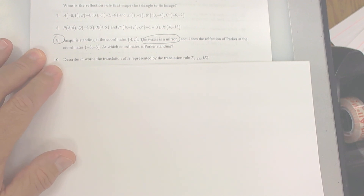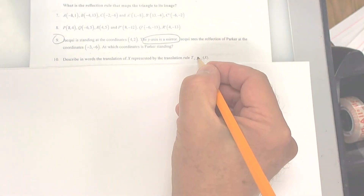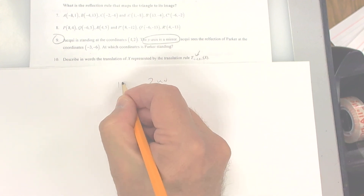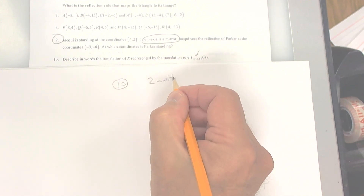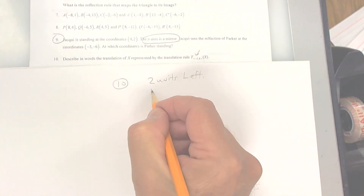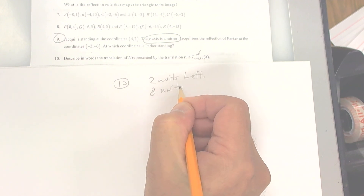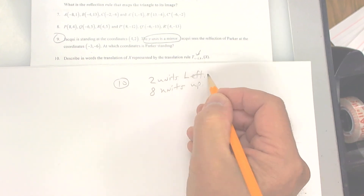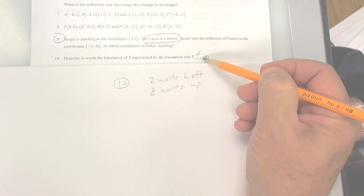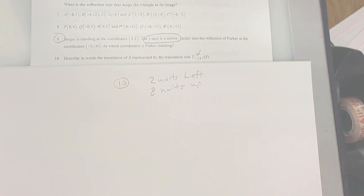Number 10: describe in words the translation of x represented by that translation. What you're doing on number 10 is going 2 units to the left and 8 units up. So it's a translation: 2 units left and 8 units up. That's all you do for that one.